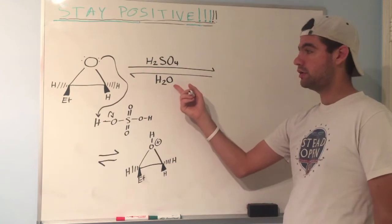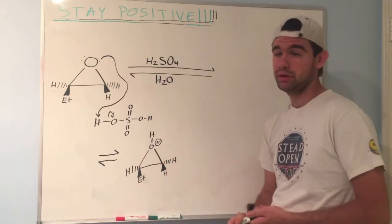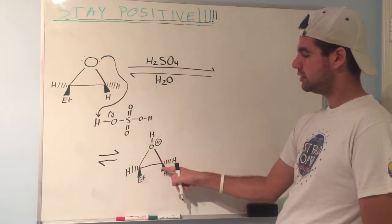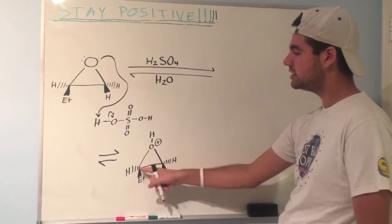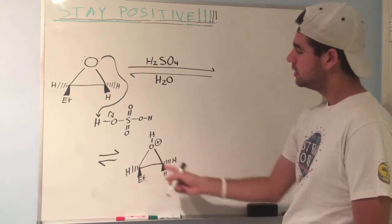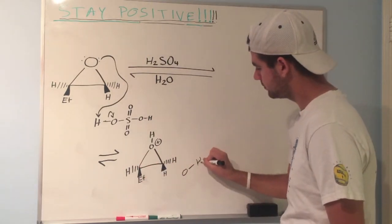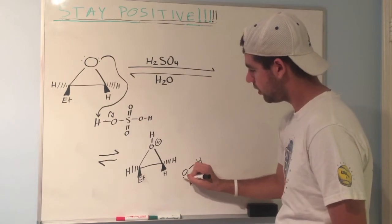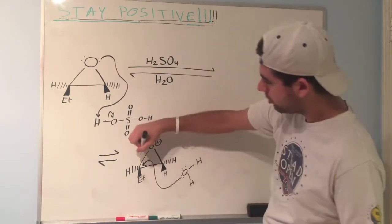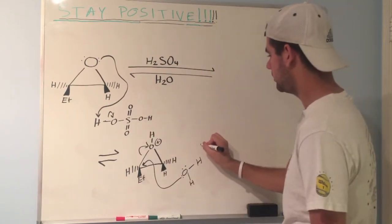It gets a plus one formal charge because it's oxygen with three bonds. Now, where is the nucleophile, which is water in this case, going to attack? It attacks at the more substituted carbon. The more substituted carbon is here - this one is monosubstituted with only one carbon attached, while this is disubstituted with an ethyl group and a CH2 attached. So H2O nucleophile attacks right here.